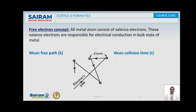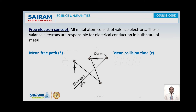For example, consider the movement of an electron. Between the first collision, let lambda 1 be the distance traveled. For the second collision, let lambda 2 be the distance traveled. Similarly, for the third collision, let lambda 3 be the distance traveled. If we consider n number of collisions, then lambda is equal to (lambda 1 + lambda 2 + lambda 3 + ... + lambda n) divided by n. That average distance traveled by the electron between successive collisions with the lattice sites is known as mean free path, denoted by symbol lambda.